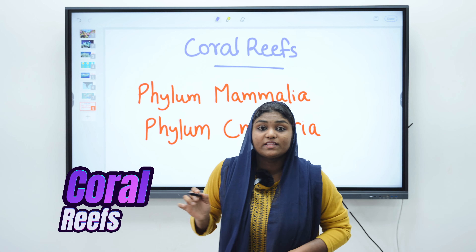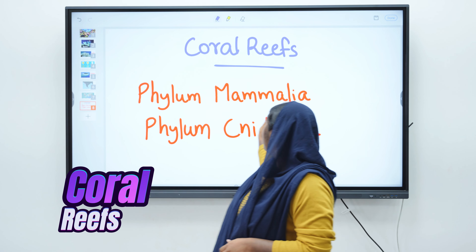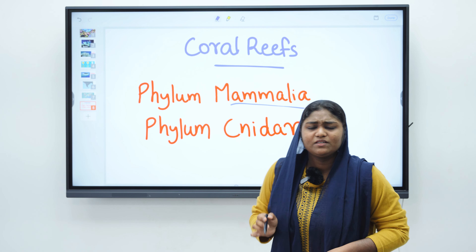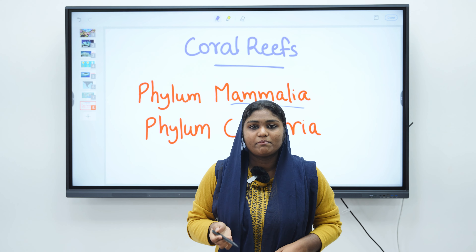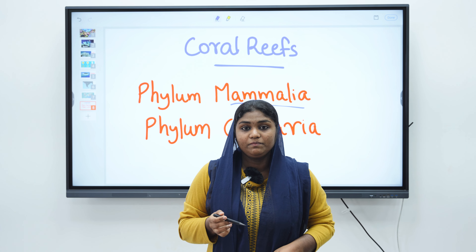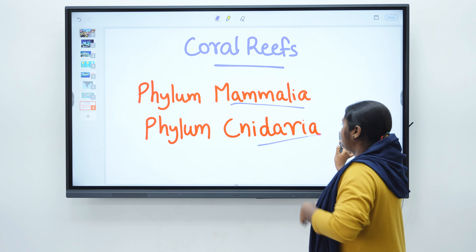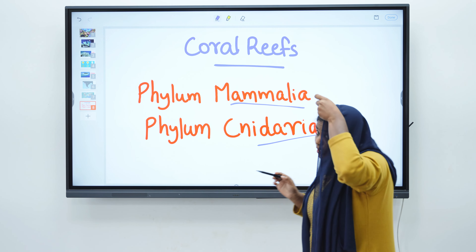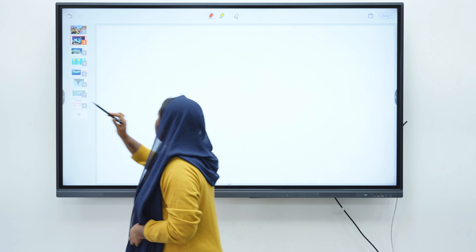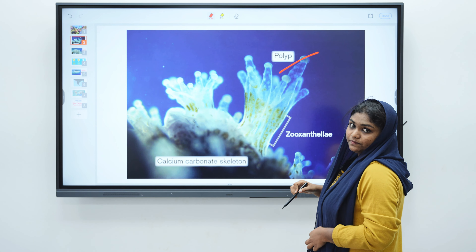We know that human beings are included in phylum Mammalia — we are mammals. Likewise, there is another phylum called Nidoria. It includes organisms like coral polyp.